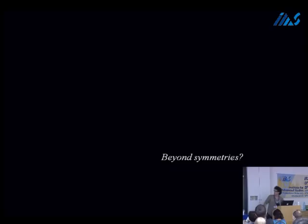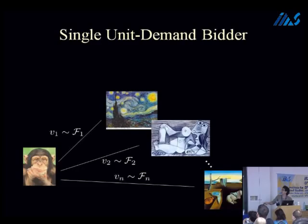What happens if you want to go beyond symmetries? Say you have a single bidder with independent values for the items. The result I presented allows you to solve this problem if the items have the same distributions. If the distributions are different, then all bets are off — there's no symmetry in the setting. I don't know how to solve it; it's a difficult problem. So the next question I ask is: can I at least solve the pricing problem? Can I find prices for these items so that I get the best revenue?